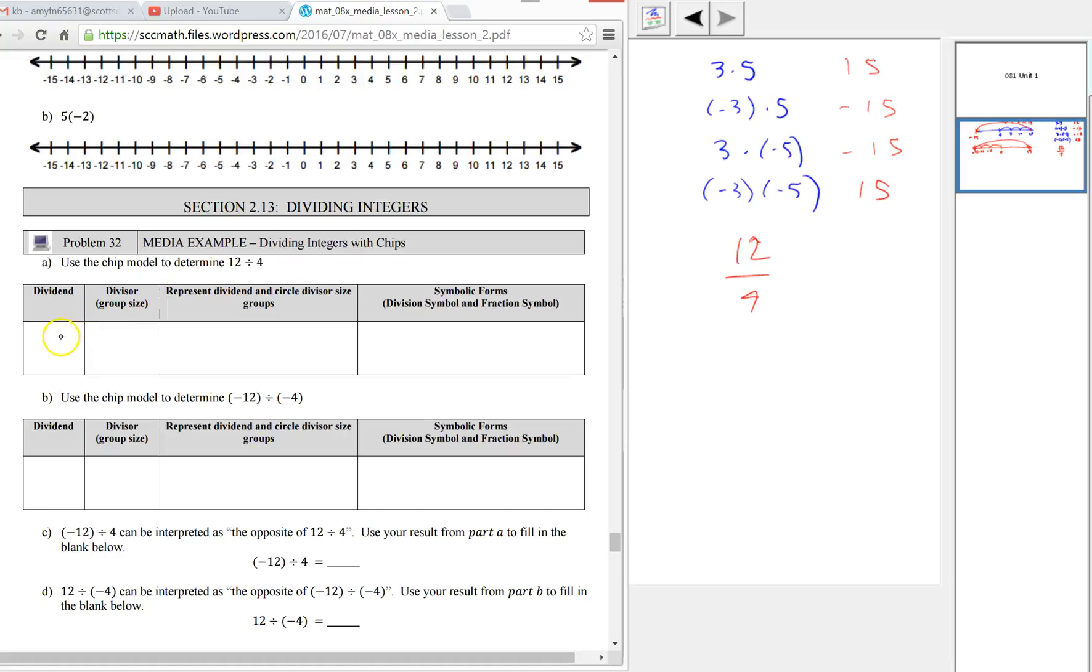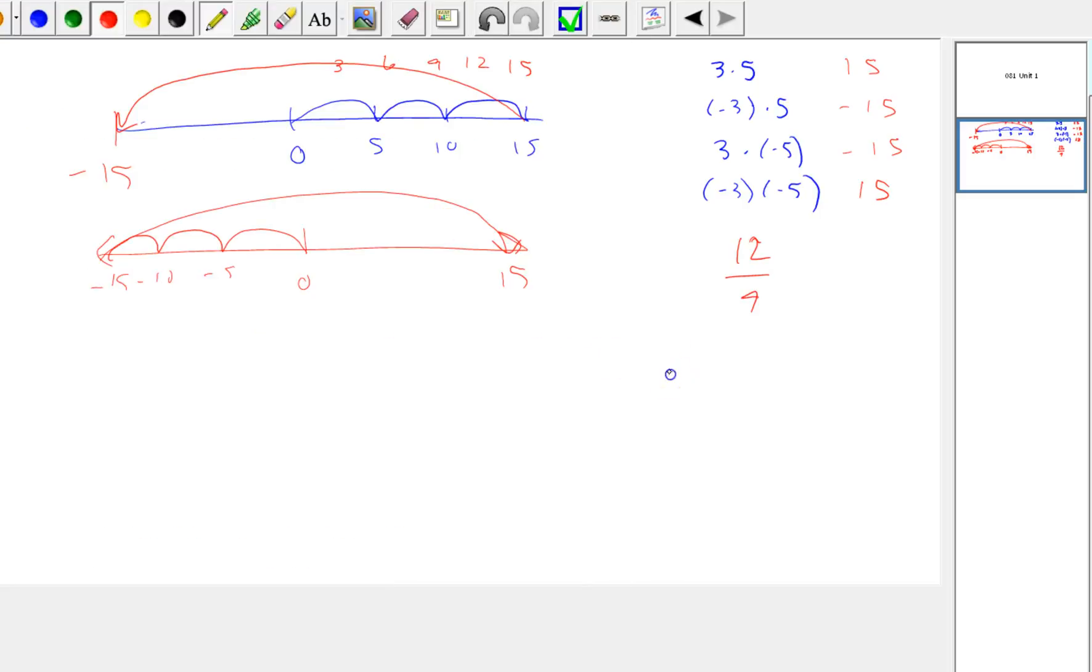We start with the dividend, which is 12. The group size is 4, and then we're going to circle divisor size groups. Here's 1, 2, 3, 4, 5, 6, 7, 8, 9, 10, 11, 12. They can represent this with chips, and then you might want to have them practice writing it on paper. If they write it symbolically, then they can use it when they don't have chips on a test. We want groups of size 4. There are 3 groups of size 4.